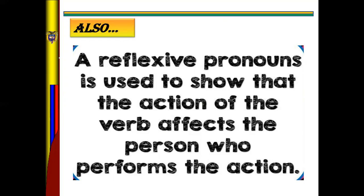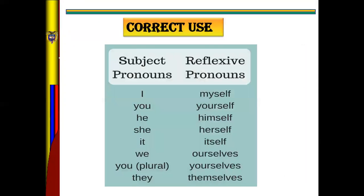Recordemos que los pronombres reflexivos se usan para una acción que afecta directamente a un verbo o que hacemos mención hacia una persona. So, remember the correct use of reflexive pronouns. You have subject pronouns: I, you, he, she, it, we, you in plural, and they. For 'I', the reflexive pronoun is 'myself'.